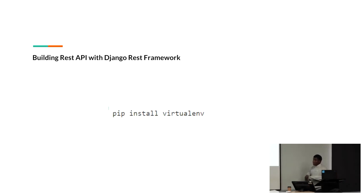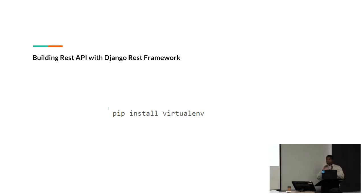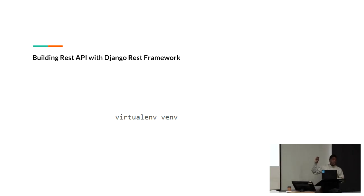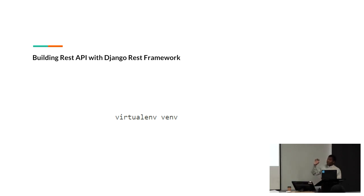After that, you have to install the virtual environment on your machine, where we are going to install all the necessary packages we need to build these web servers. You have to initialize your virtual environment because you don't want to mix your different packages with the packages you're going to use for this project. In this project we are going to use the Django REST framework, so we don't want to bring that package into the main repository.